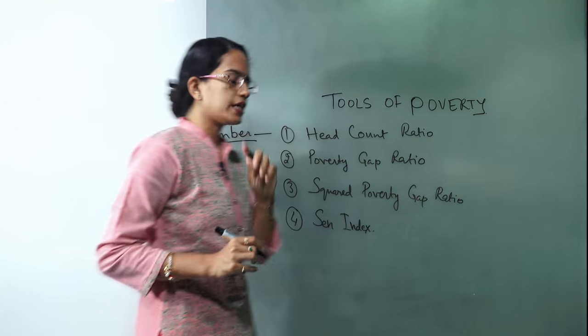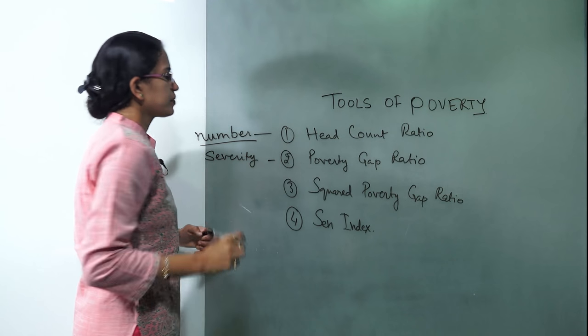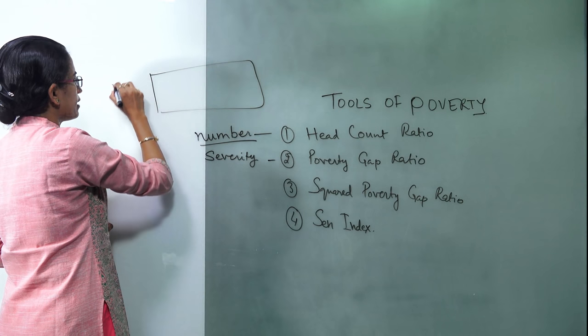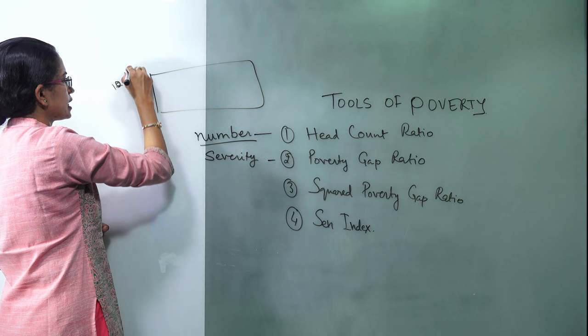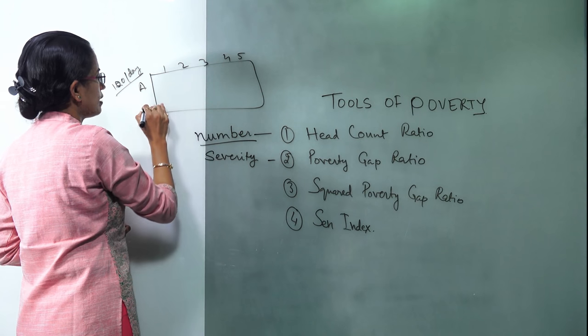The next is poverty gap ratio. Poverty gap ratio helps us to understand the severity of poverty. So let's say in a country you have an average of hundred rupees a day that should be earned, you have five different people, and you have two different regions. Now let's say the last three work very well and they earn a decent living, so there is